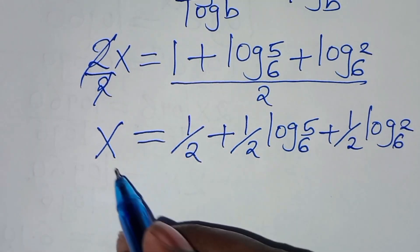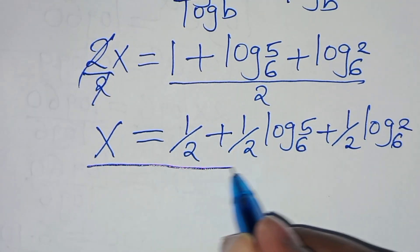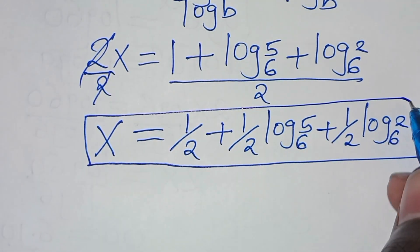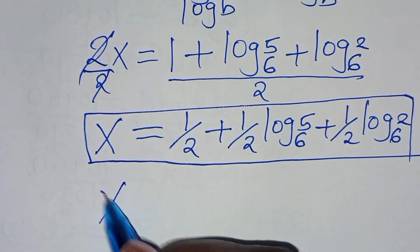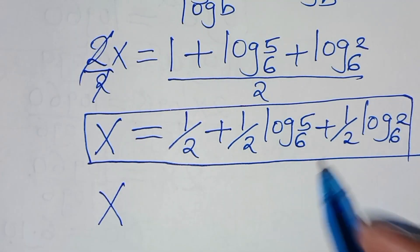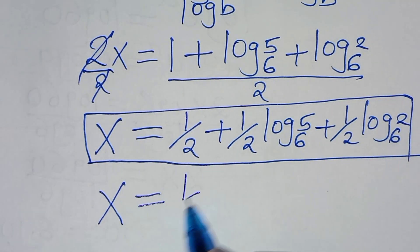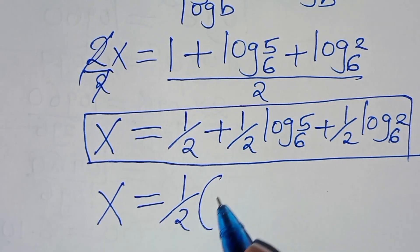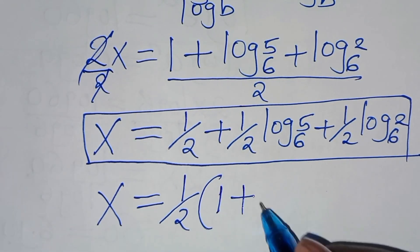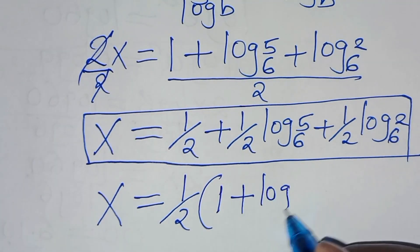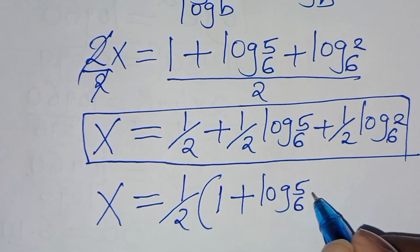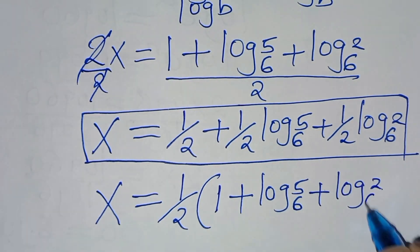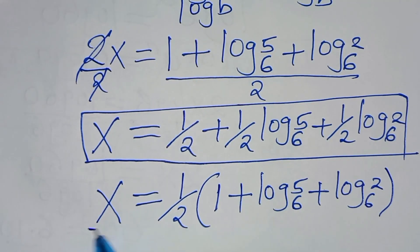So now we have that x is equal to one-half plus one-half·log₆5 plus one-half·log₆2. This is the value of x, which we can also write as x equals one-half times the quantity 1 plus log₆5 plus log₆2.